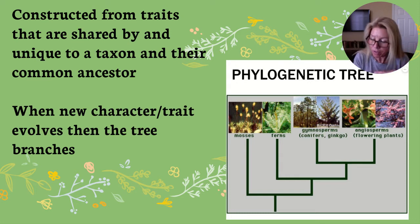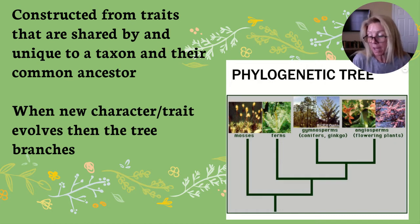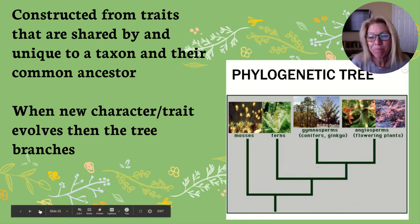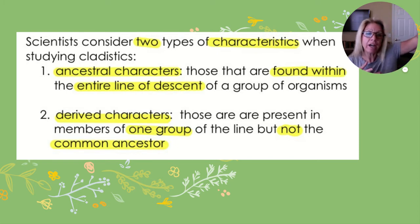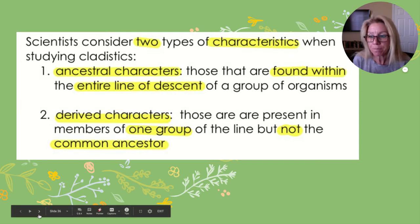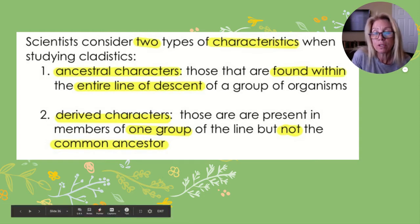My notes are in the video description — column one is the scaffolding I'll help you fill in, and column two is for pictures. We are in section 19.3: Phylogeny and Interpreting Phylogeny. Trees are constructed from traits shared by and unique to a taxon and their common ancestor. When a new character trait evolves, the tree branches. Ancestral characters are shared throughout the entire lineage or clade, while derived traits are new and unique — not found in the common ancestor — and are used to distinguish groups.